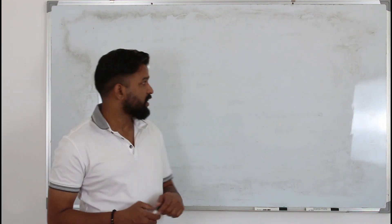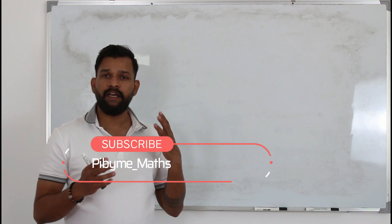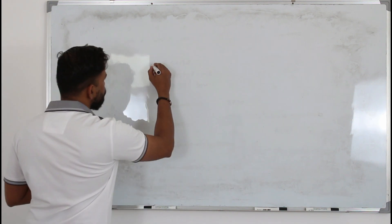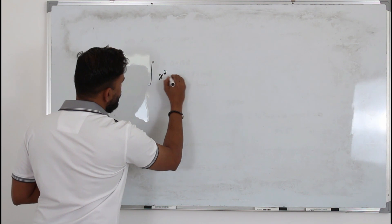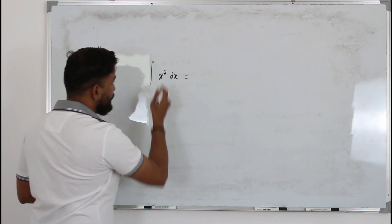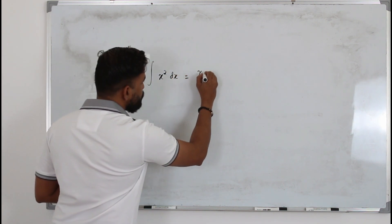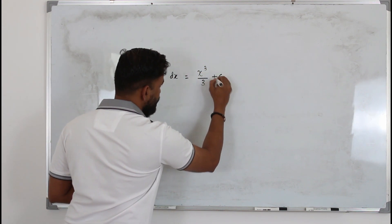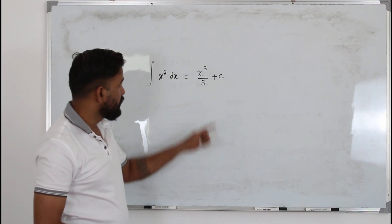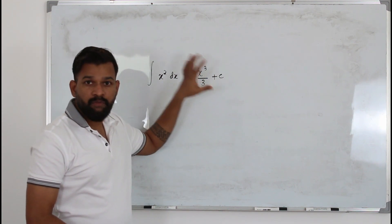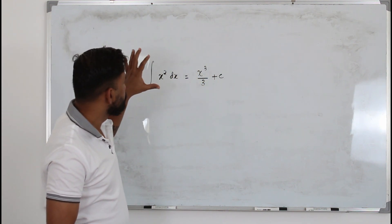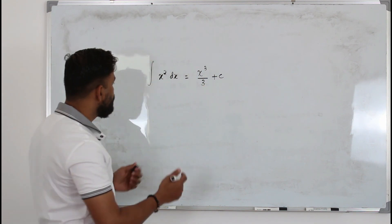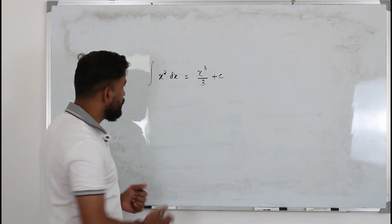So what is a definite integral? We must have learned integration in P1. The integration of x squared is x power 2 plus 1 over 2 plus 1 plus c. The plus c is very important — if you don't add plus c, you will lose one mark. So we learned this in P1. Now here in P2, we are going to learn something called definite integral.